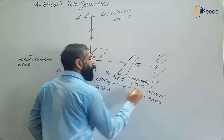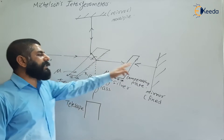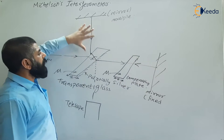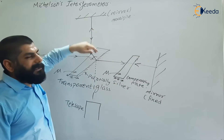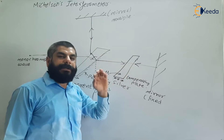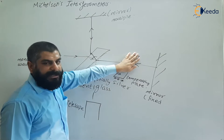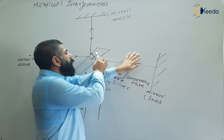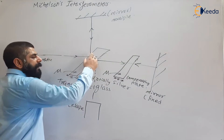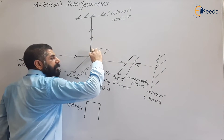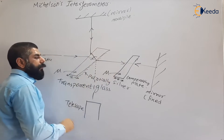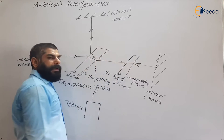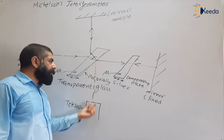In the Michelson interferometer, two mirrors are placed at equal distance from the center beam splitter. One mirror is fixed and the other is movable. If they are at equal distance, the path difference between reflected rays is zero. Without the compensating plate, a path difference would exist due to the glass plate, so the compensating plate removes this difference.